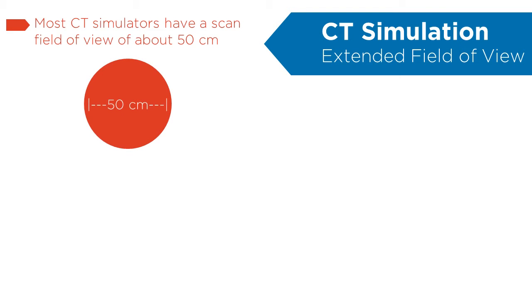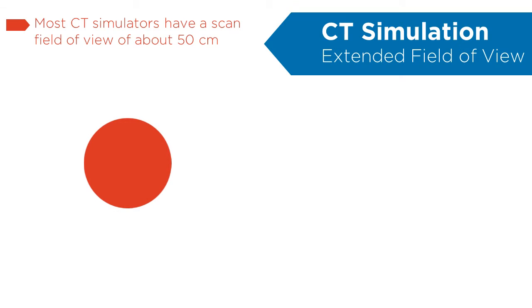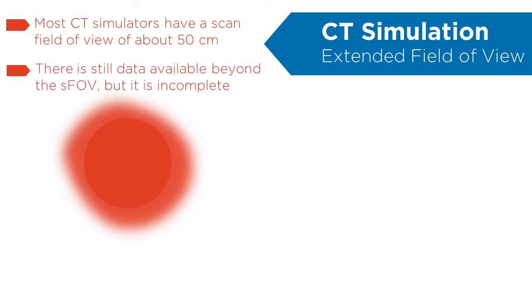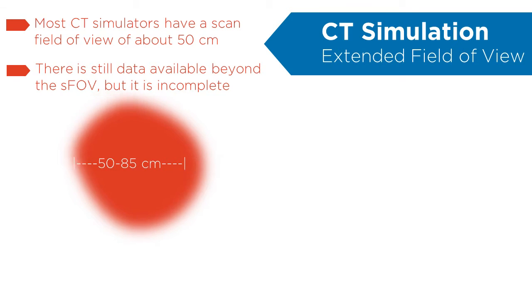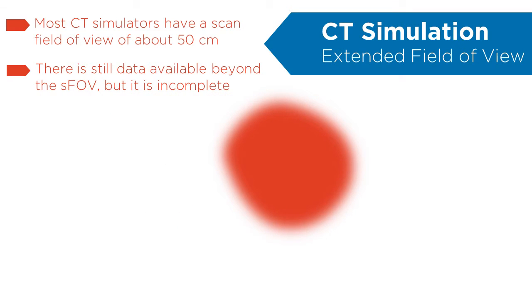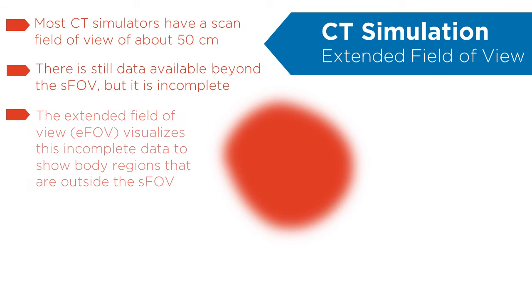Most CT simulators can accurately image anything within a 50cm diameter called the scan field of view. There is still some less accurate, incomplete information about body parts that extend outside of the scan field of view, which can be imaged with a setting known as the extended field of view. This is often very inaccurate. The distorted body contour results in an incorrect source to surface distance, leading to suboptimal radiation treatment dosages.